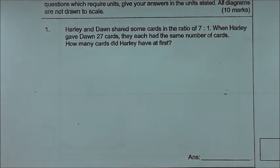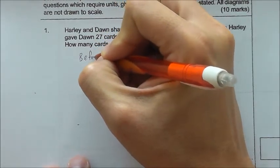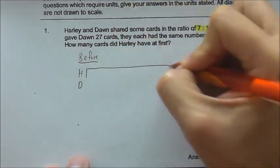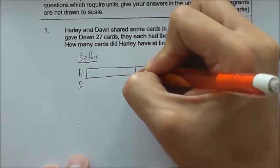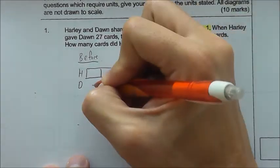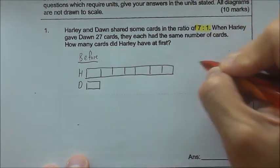Alright guys, first of all, let me just reiterate that when you have a ratio 7 is to 1, it means that Harley has 7 units and Dawn has 1 unit. So I can draw this for the before model. Harley and Dawn... So Dawn would be 1 unit.